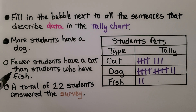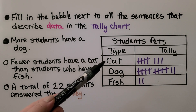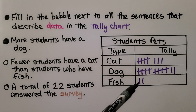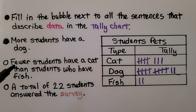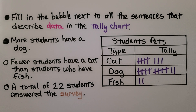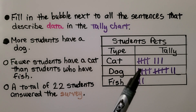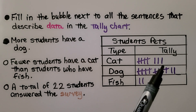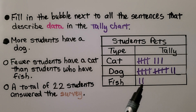The next option says 'fewer students have a cat than students who have fish.' We see cat has 8 tally marks and fish has 2. Fewer students have a cat? No — that's not true. There are fewer fish, not fewer cats. The next option says 'a total of 22 students answered the survey.' We count all tally marks: 5, 10, 15, 16, 17, 18, 19, 20, 21, 22. Yes — 22 students answered the survey.